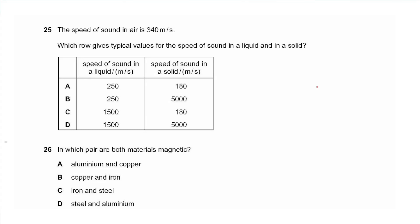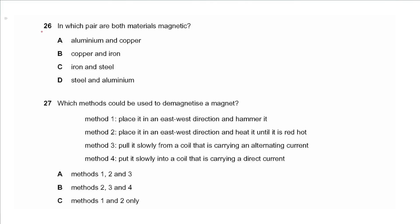Question 25 says the speed of sound in air is 340 meters per second. Which row gives typical values for the speed of sound in liquid and in a solid? In a liquid like water the speed is about 1500 m/s, and in a solid it would be around 5000 m/s, so the answer is D.